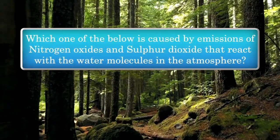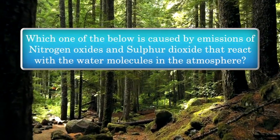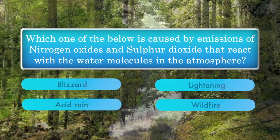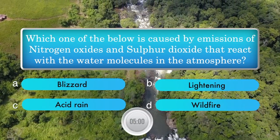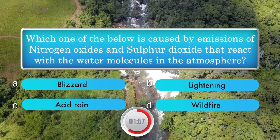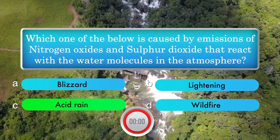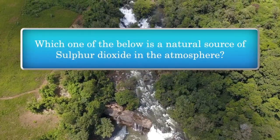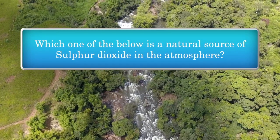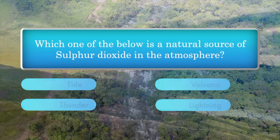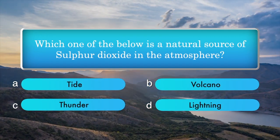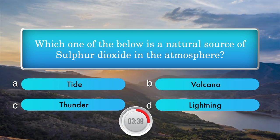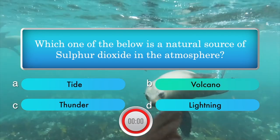Which one of the below is caused by emission of nitrogen oxides and sulphur dioxide that react with the water molecules in the atmosphere? Options: blizzard, lightning, acid rain, wildfire. Answer is acid rain. Which one of the below is a natural source of sulphur dioxide in the atmosphere? Options: tide, volcano, thunder, lightning. Answer is volcano.